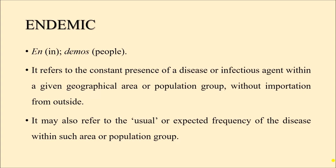Endemic is derived from 'en' meaning 'in' and 'demos' meaning 'people.' It refers to the constant presence of a disease or infectious agent within a given geographical area or population group without importation from outside. It may also refer to the usual or expected frequency of disease within such an area or population group. If a disease is always present and expected in a given area, we say it is endemic there.